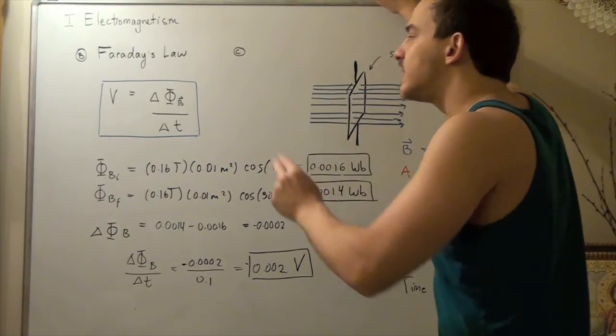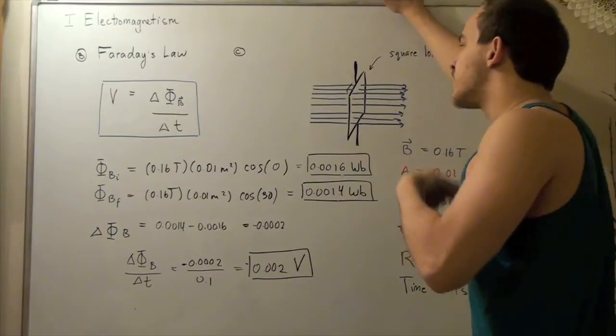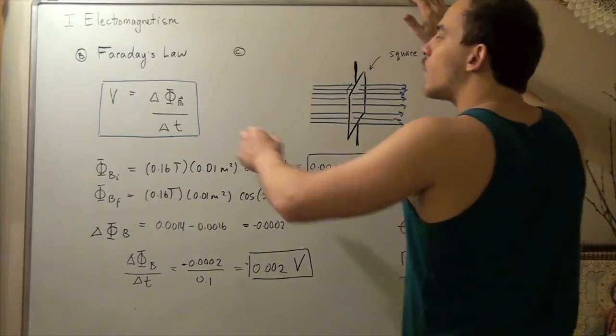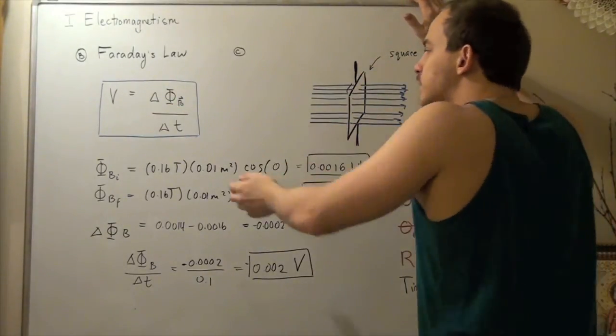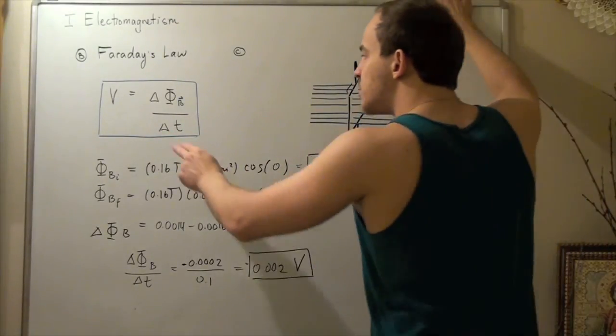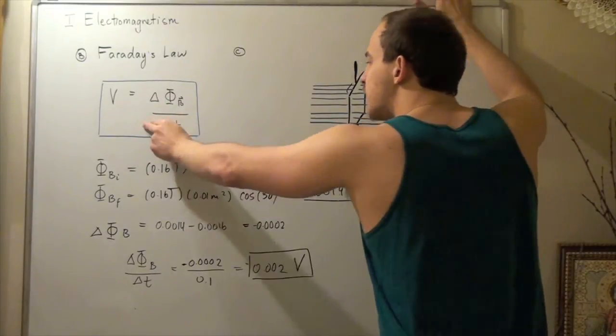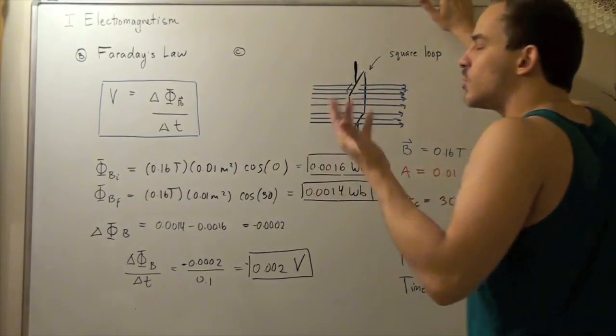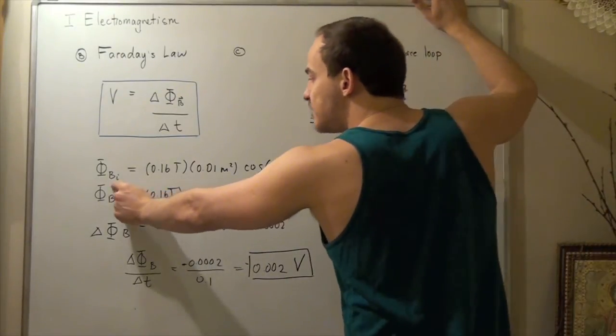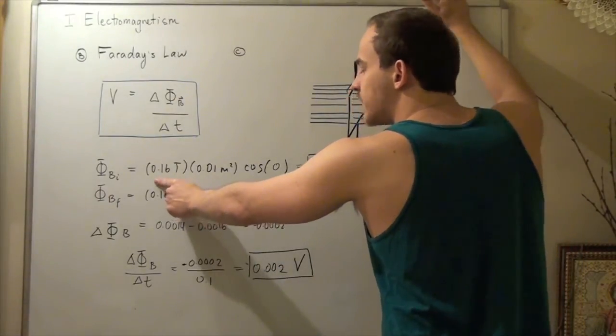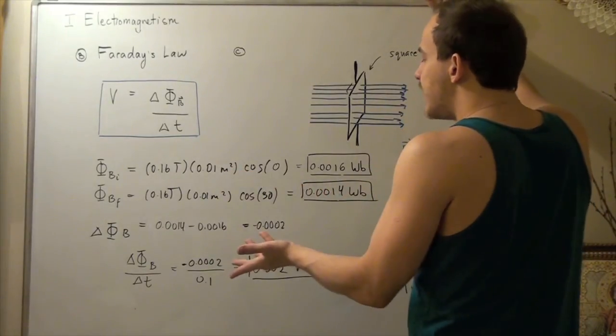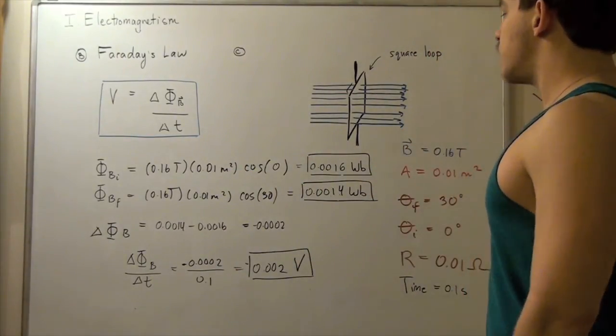So we must first find the voltage, and then we could use Ohm's law to find the current. So let's begin. We have to use this equation. So we have to find our initial magnetic flux and our final magnetic flux. This time we know what that is. That's given to us. So as long as we know this and we know this, we can find our voltage, and then we can use the equation V equals IR to solve for our current. So let's begin. The initial magnetic flux is simply this guy, our magnetic field multiplied by our area, multiplied by cosine zero, because that's our initial angle. That gives us 0.0016 Weber.